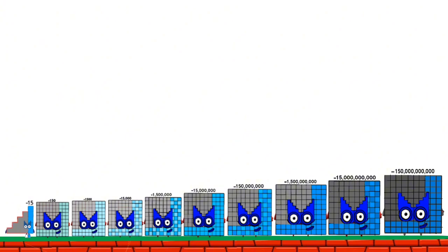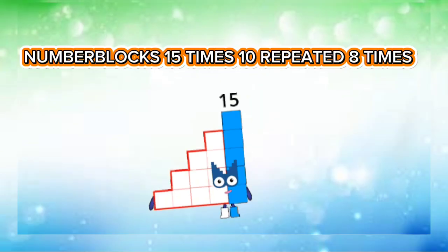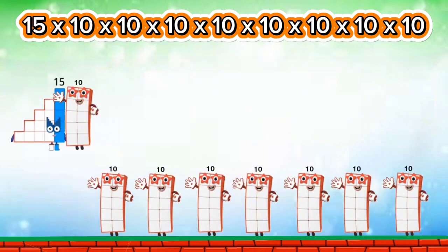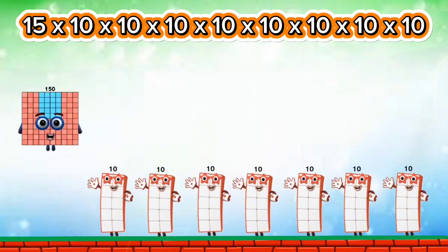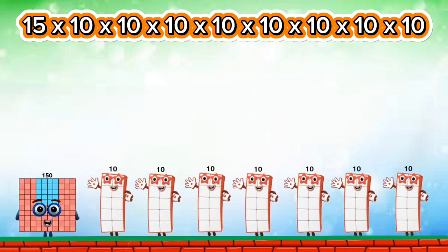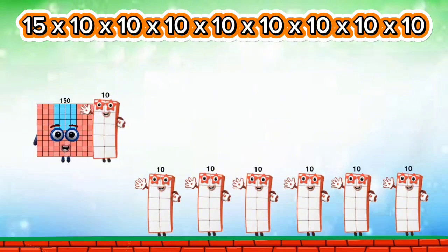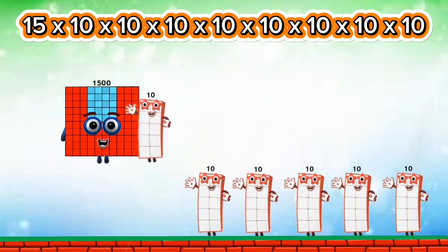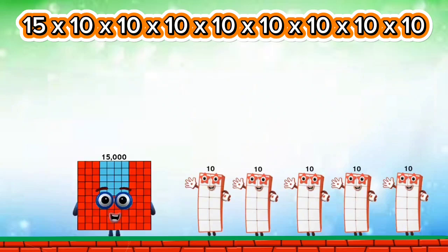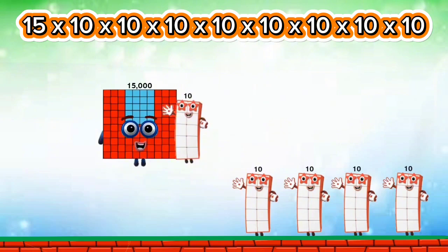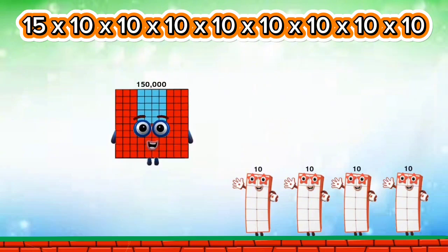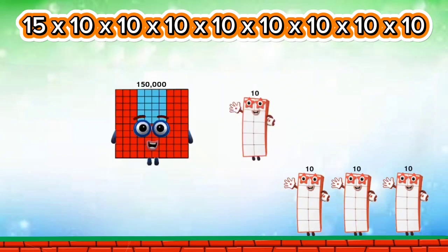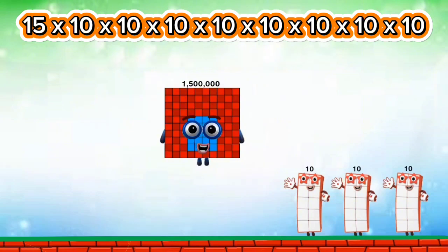1,500,000,000 times 10 equals 150. 150 times 10 equals 1,500. 1,500 times 10 equals 15,000. 15,000 times 10 equals 150,000. 150,000 times 10 equals 1,500,000.